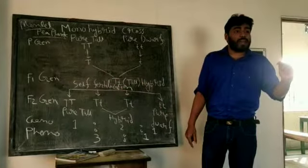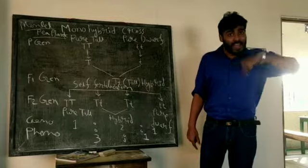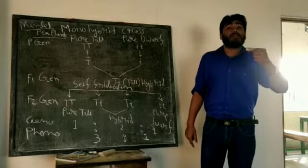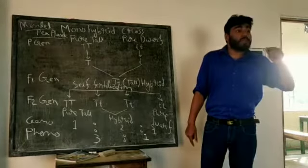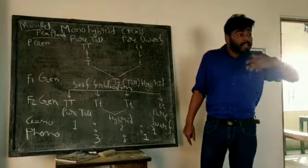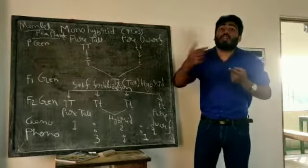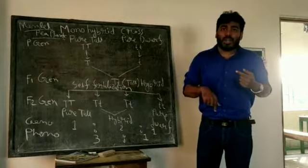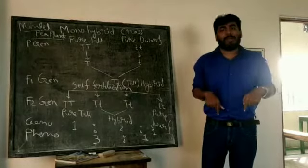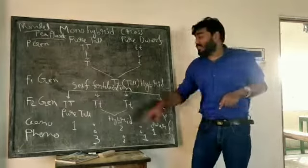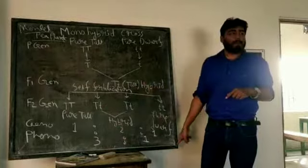What does phenotype mean? Phenotype refers to how an organism looks from the outside — its observable traits, not its internal gene composition. So even though some plants are hybrid tall, they still look tall from the outside.